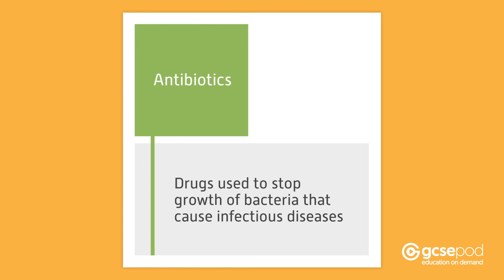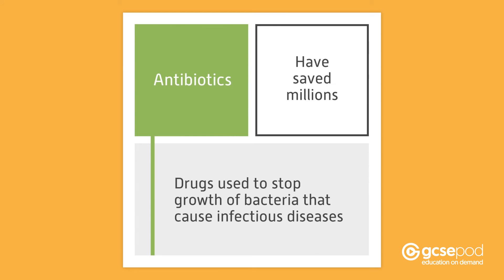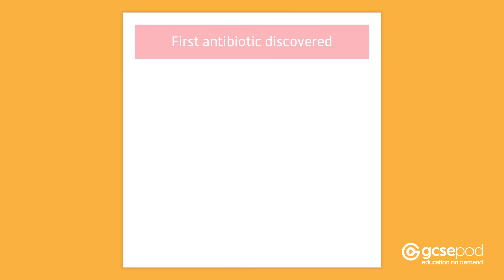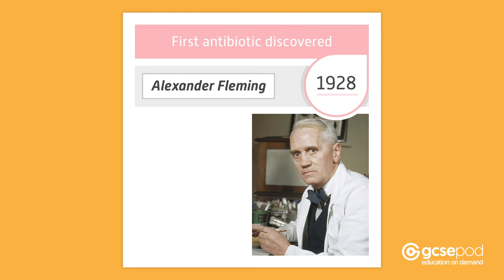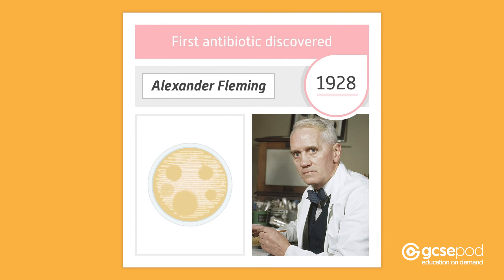Antibiotics are drugs used to stop the growth of bacteria that cause infectious diseases. They have saved millions of lives. The first antibiotic was discovered in 1928, when Scottish microbiologist Alexander Fleming noticed mould growing on the agar dishes he was using to grow bacteria.